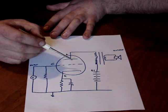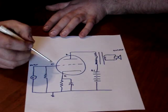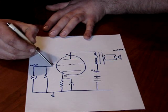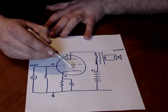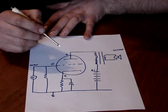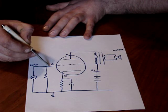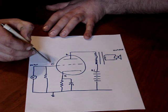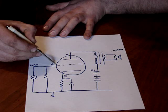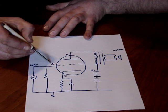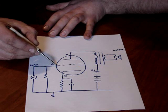So then what would happen is the grid is biased slightly above ground now. The tube is flowing some current all the time. So what happens then is as your signal goes up on the upswing of the sine wave, the tube conducts more and allows that signal to pass. It amplifies the signal.